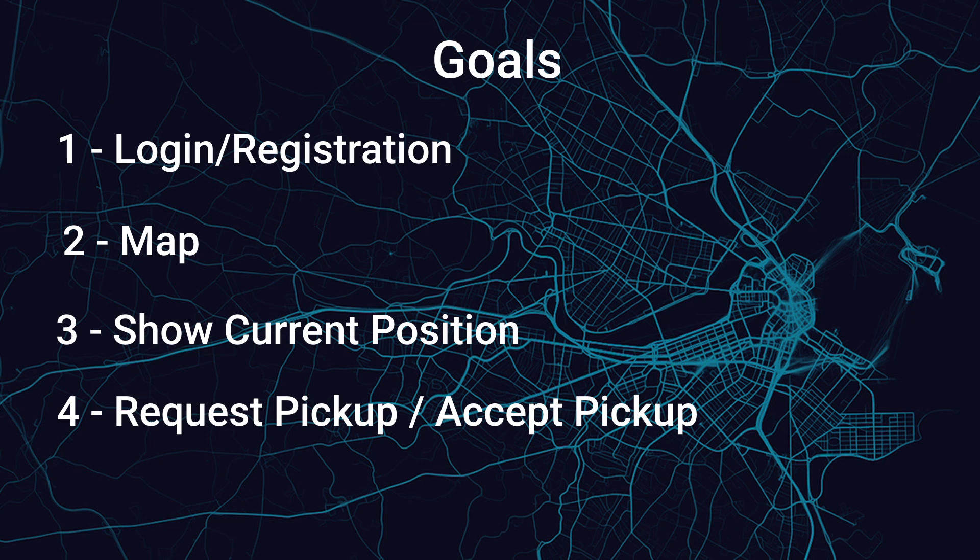The main goals and objectives for this series are: first, to get a login and registration system for both riders and customers. Then a map — we are going to use the Google Maps API, which isn't really hard because the documentation is really good. In that map we are going to show our current location, which will be continuously updating. Every time it changes we'll capture that change and save that value to the database.